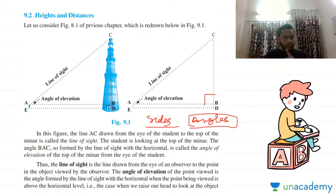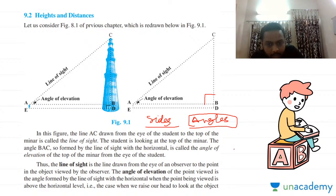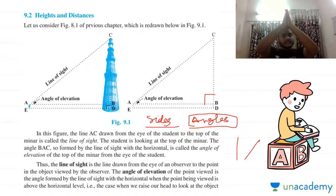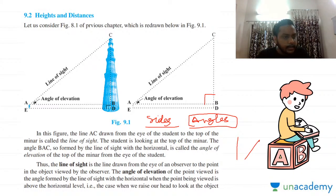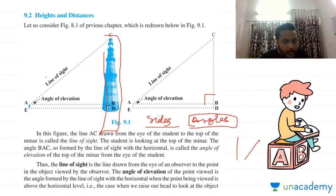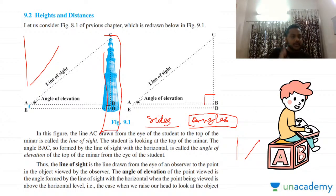If we talk about the real world around us — if there is a building, it will be straight, making a 90-degree angle with the land. Similarly, if we talk about a tower like Kutub Minar, it will be completely straight, making an angle of 90 degrees with the land.